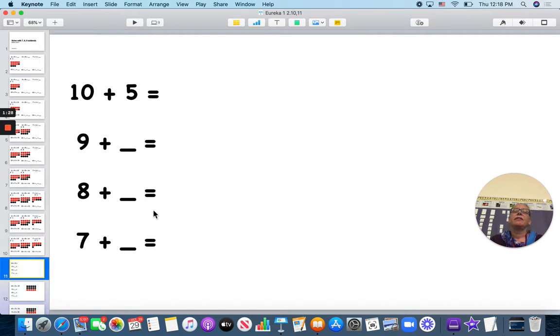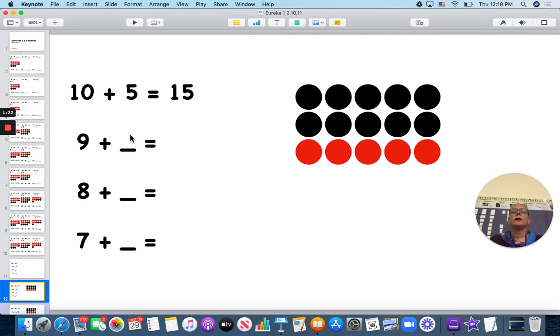Here we go. These are going to be the next ones we are going to practice. Here we have 10 black ones and 5 red ones. 10 and 5 is 15.